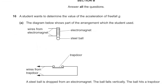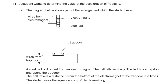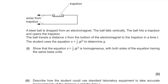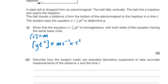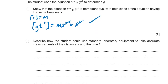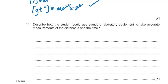Question 16: determining g using a free-fall experiment with the equation s = ½gt². Show the equation is homogeneous: the units of s are meters. The units of gt² are m/s² × s² = m. Therefore both sides have the same base units — the equation is homogeneous.